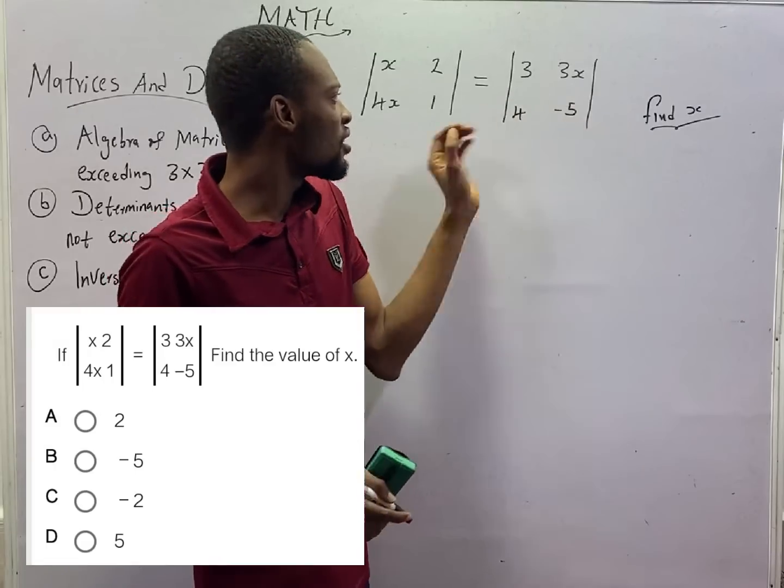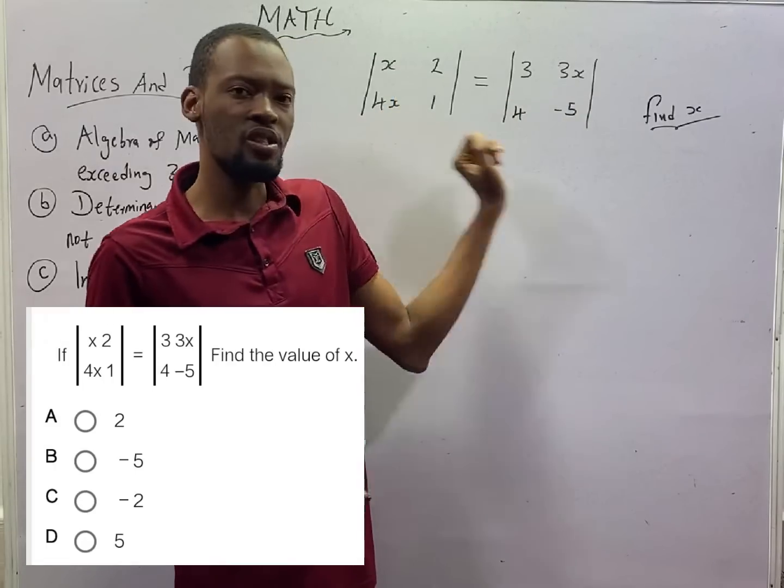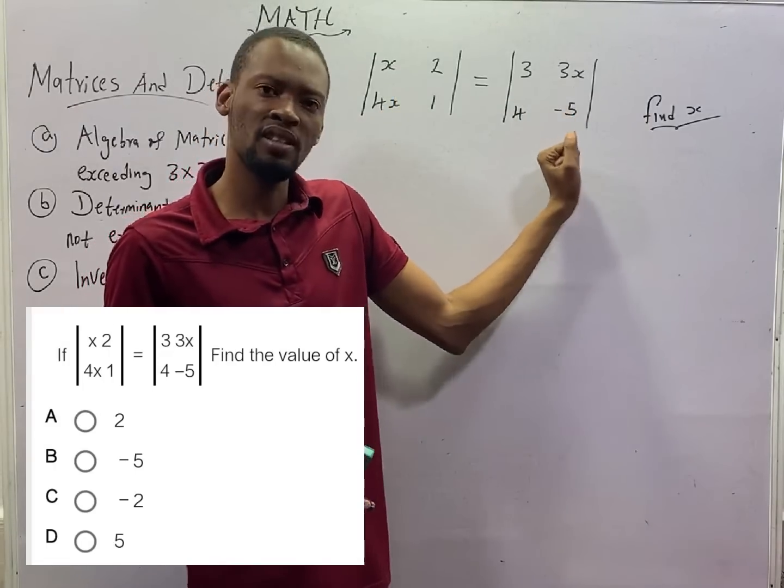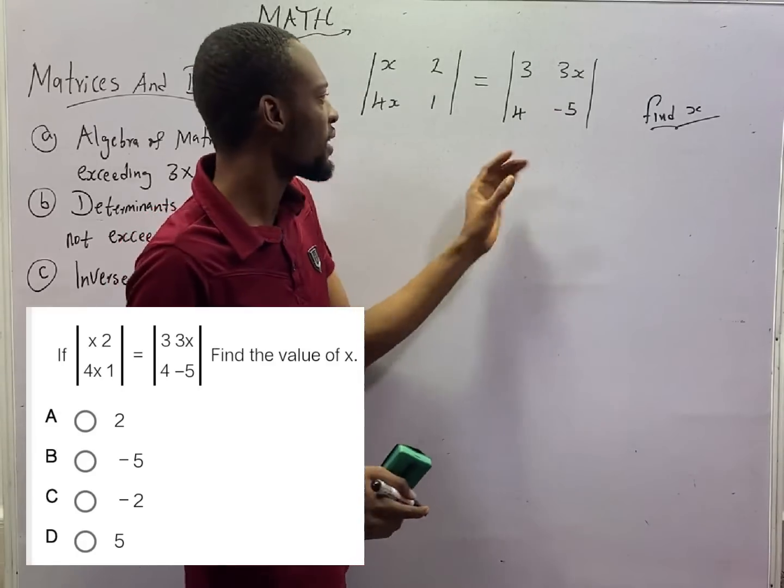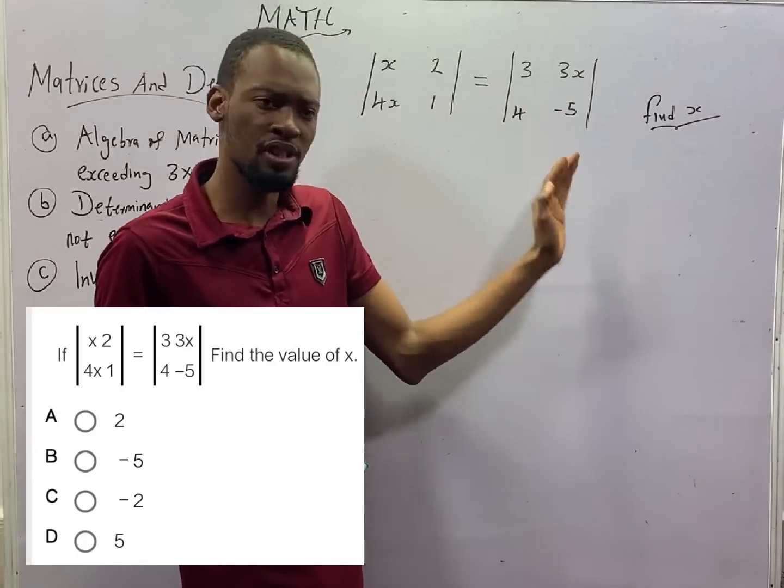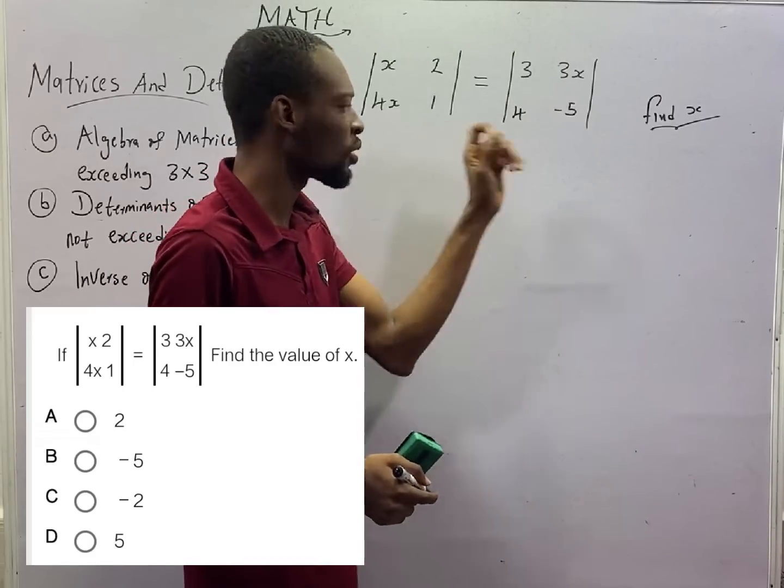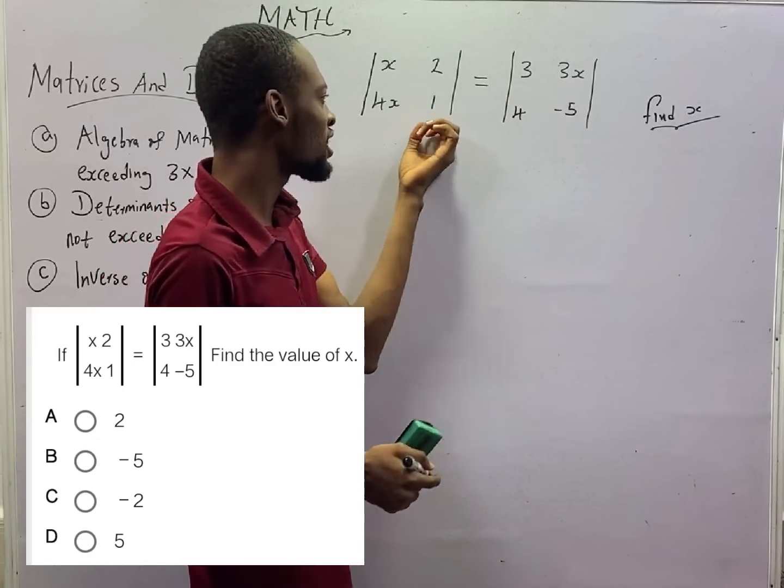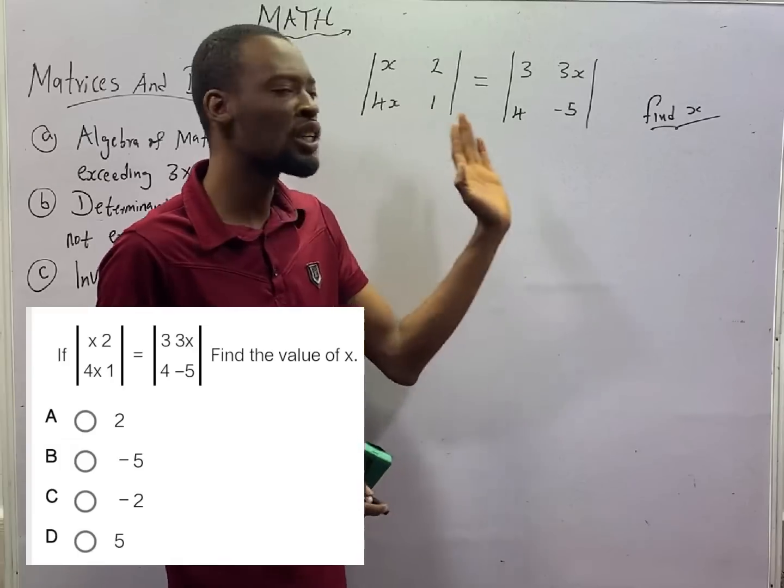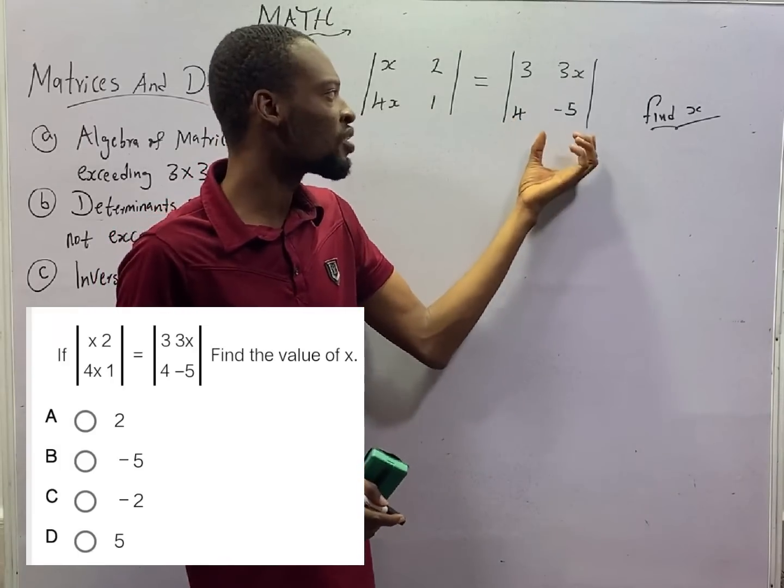it means that the determinant of this matrix is also equal to the determinant of this matrix. Anytime you are given two different matrix equations and asked to look for an unknown, look for the determinant of the first one and equate it to the determinant of the second one. That would help you get the value of the unknown.